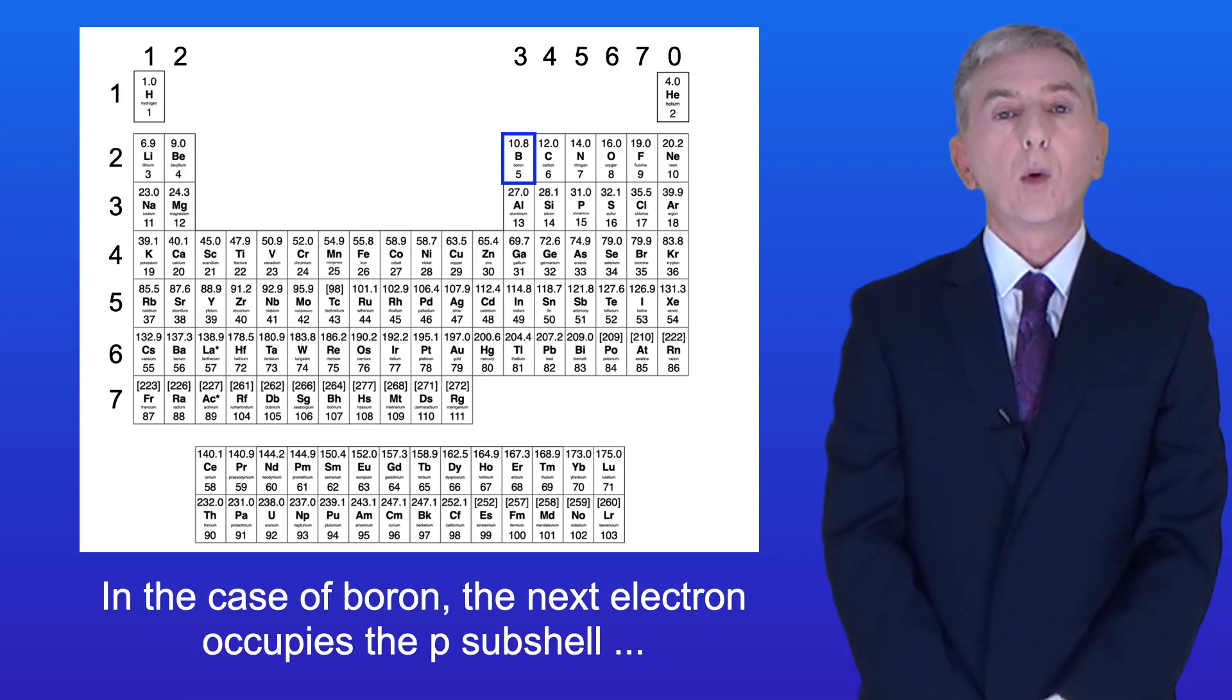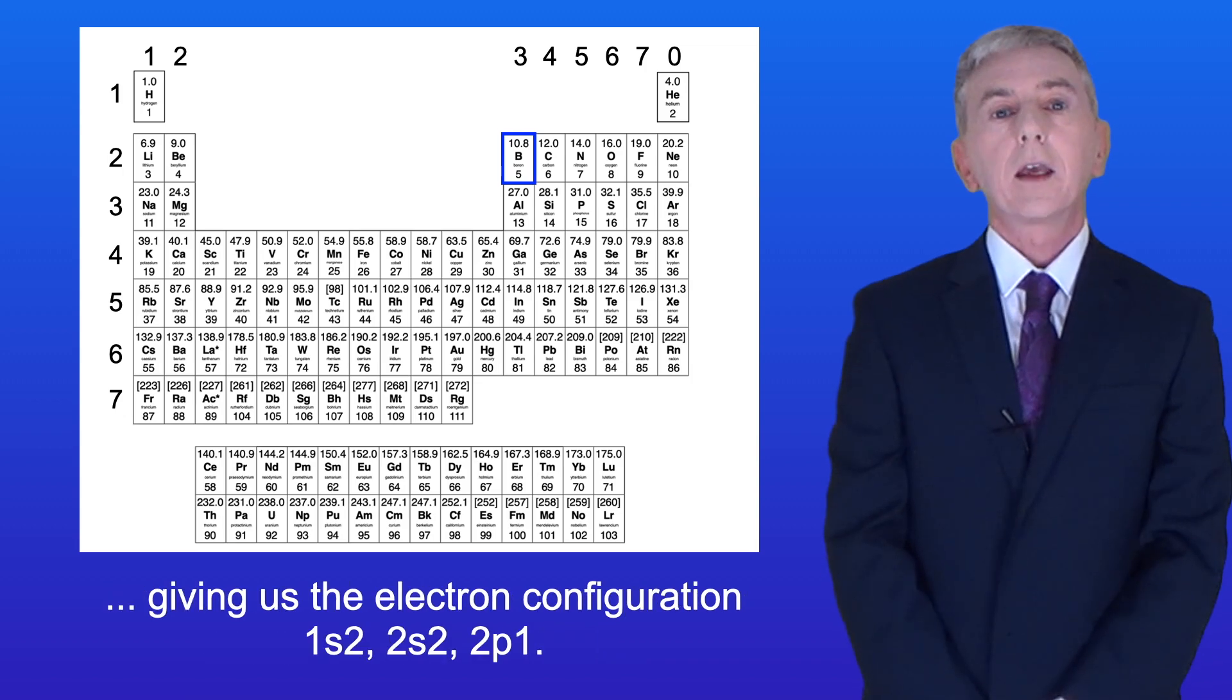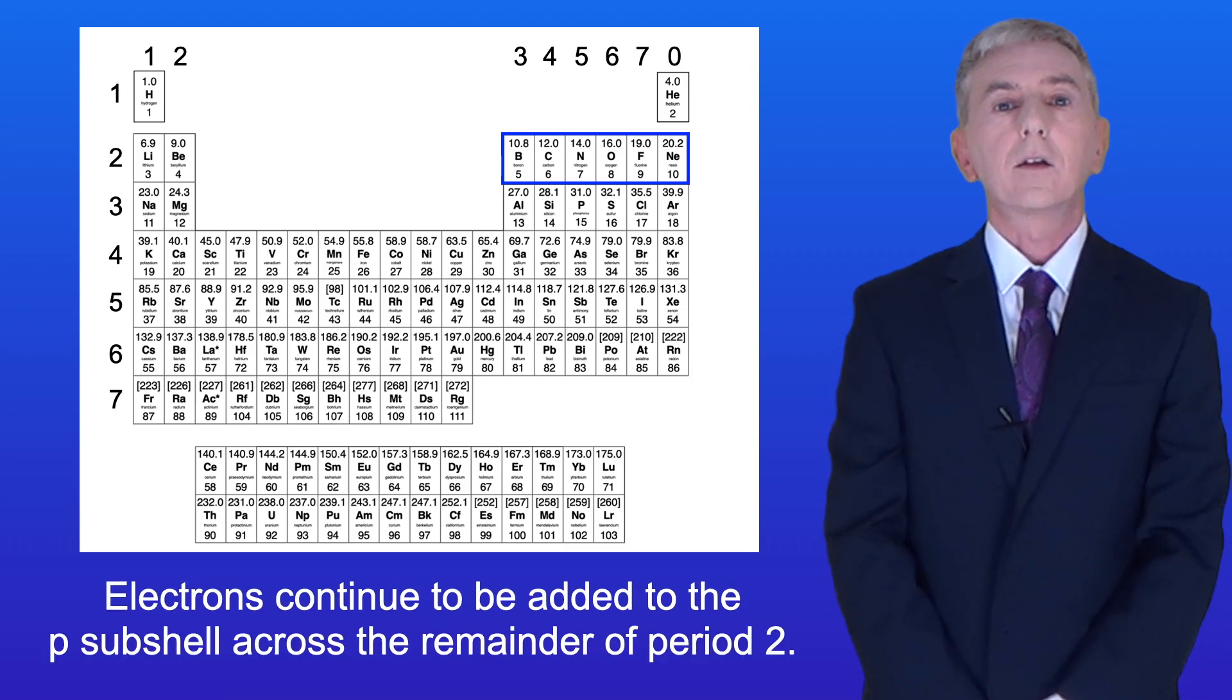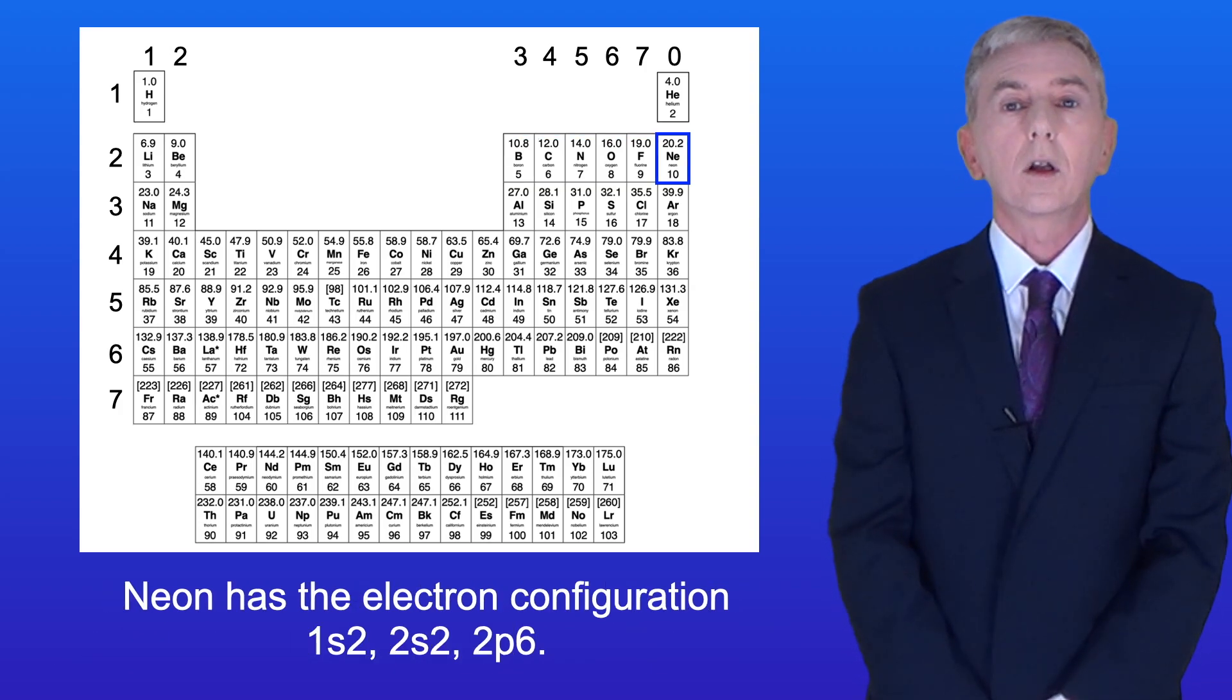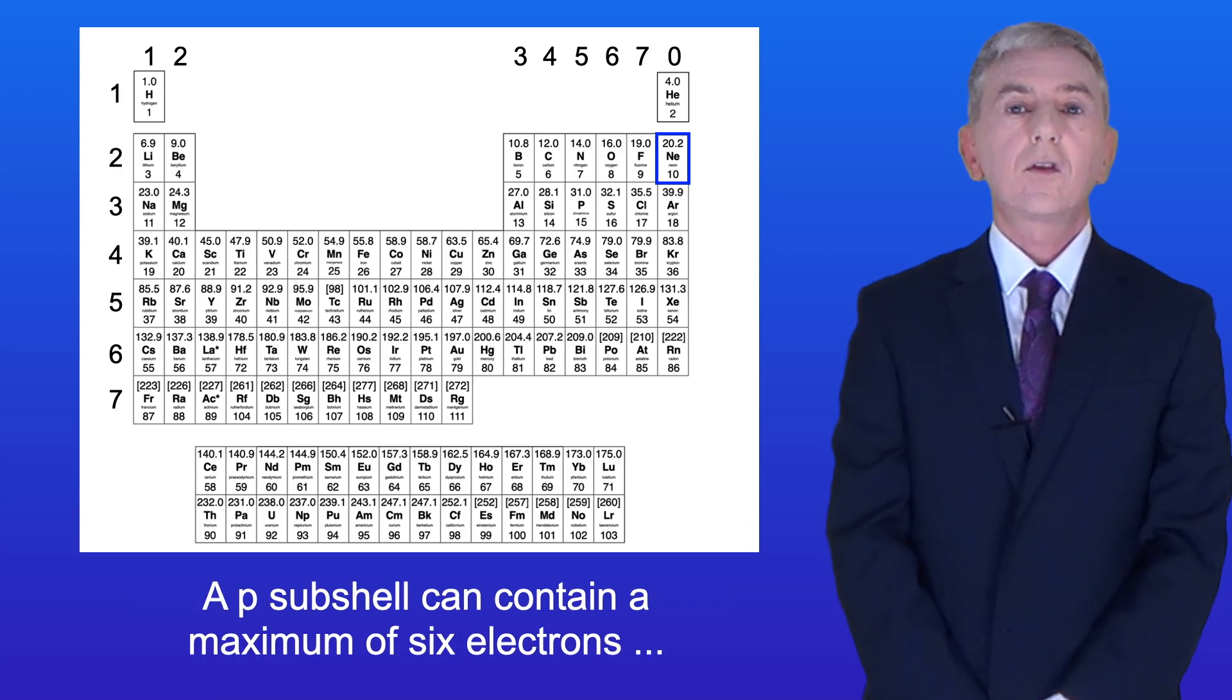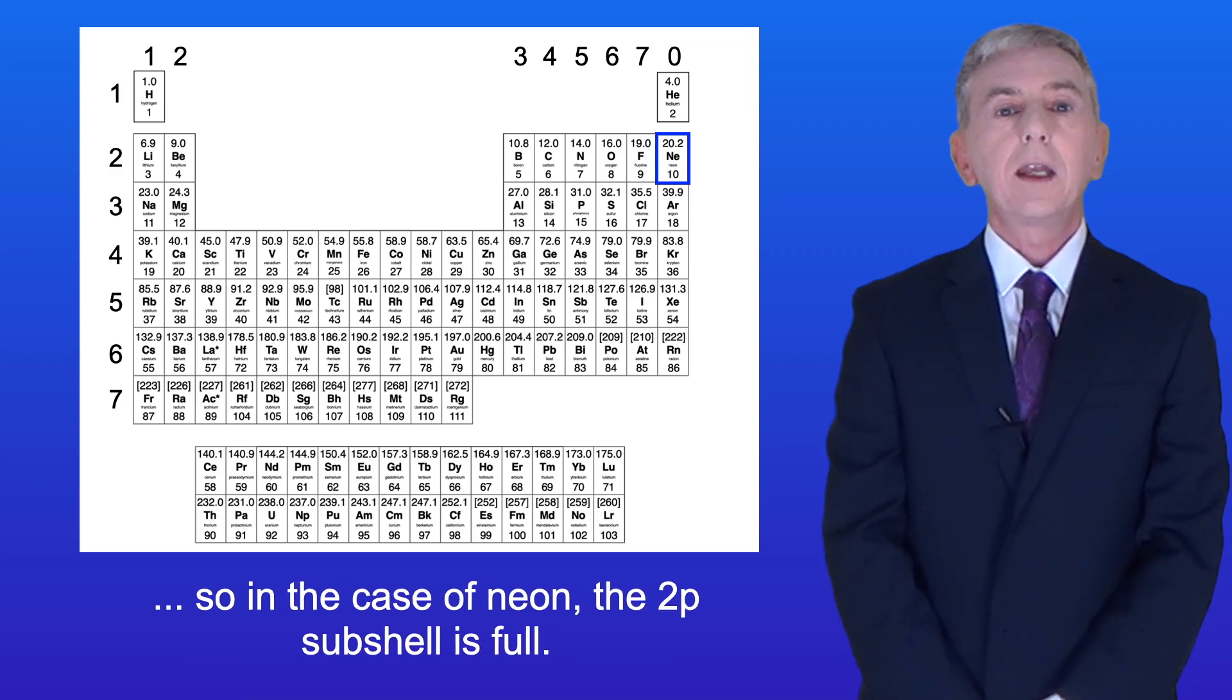So in the case of boron, the next electron occupies the p-subshell, giving us the electron configuration 1s2 2s2 2p1. Electrons continue to be added to the p-subshell across the remainder of period 2. Neon has the electron configuration 1s2 2s2 2p6. A p-subshell can contain a maximum of six electrons. So in the case of neon, the 2p-subshell is full.